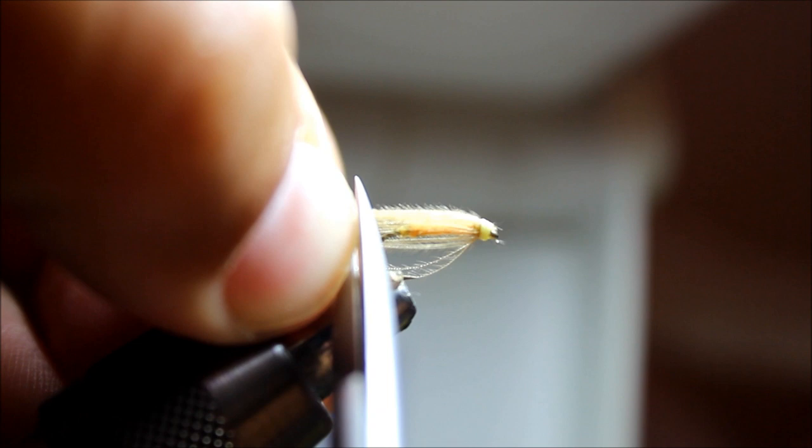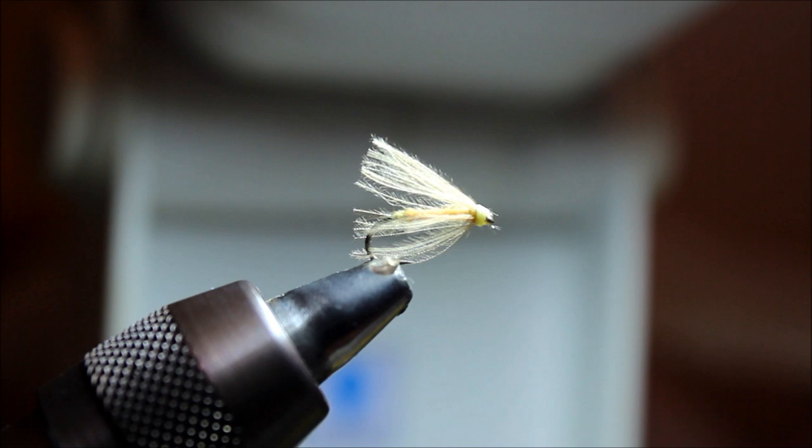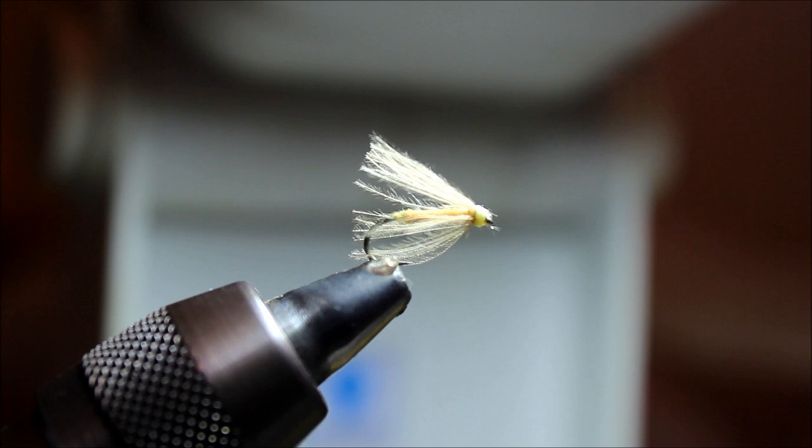But the last step which they omit is trimming the CDC feathers with the bend of the hook. That's going to help it to really skate well. Now you're going to apply just a small drop of dry magic before fishing this fly and rub it into the feather, then chase that with frog's fanny. Then about every 10 or 15 casts or after every eat that you get on the river, you're going to reapply frog's fanny until it's a little puff ball again.